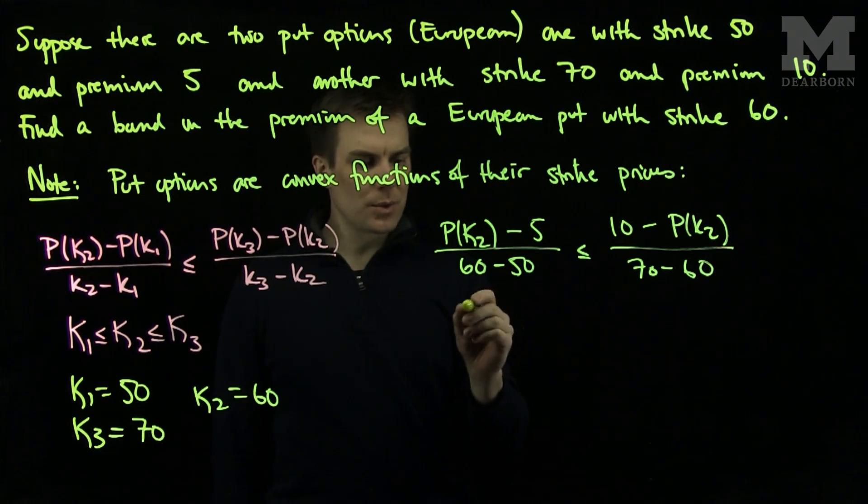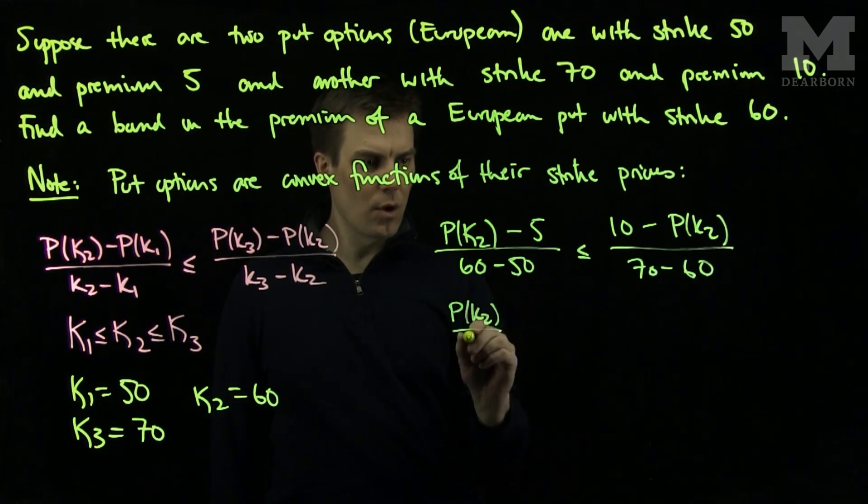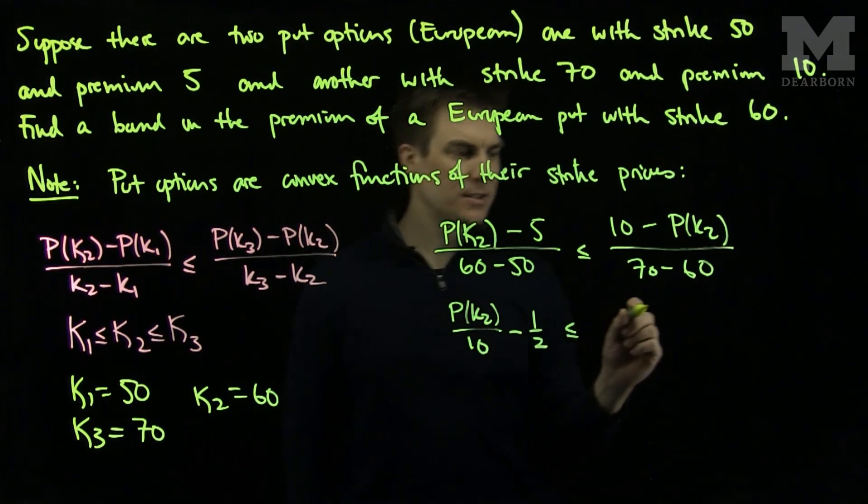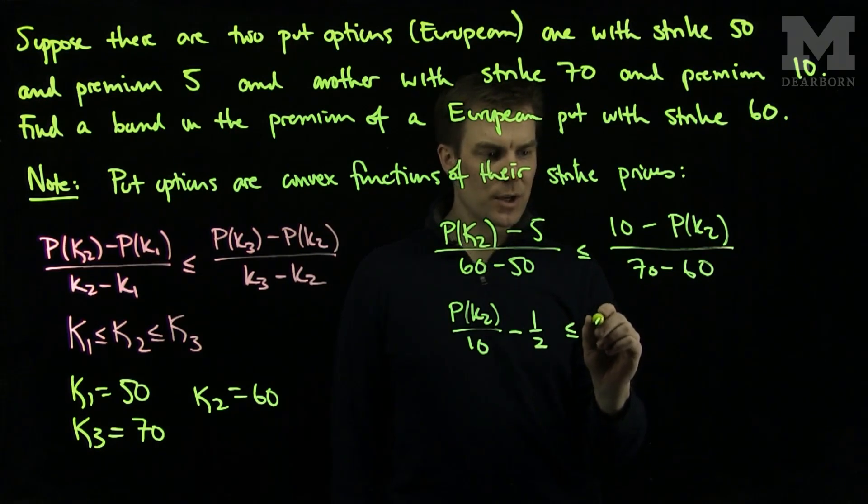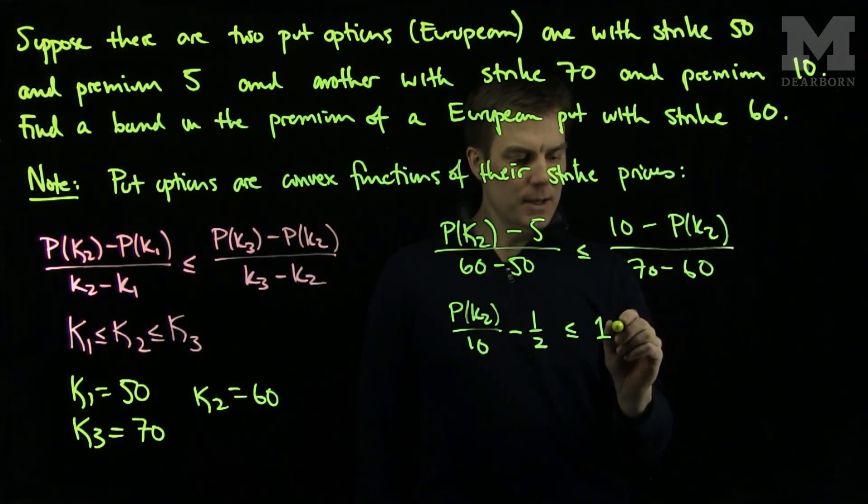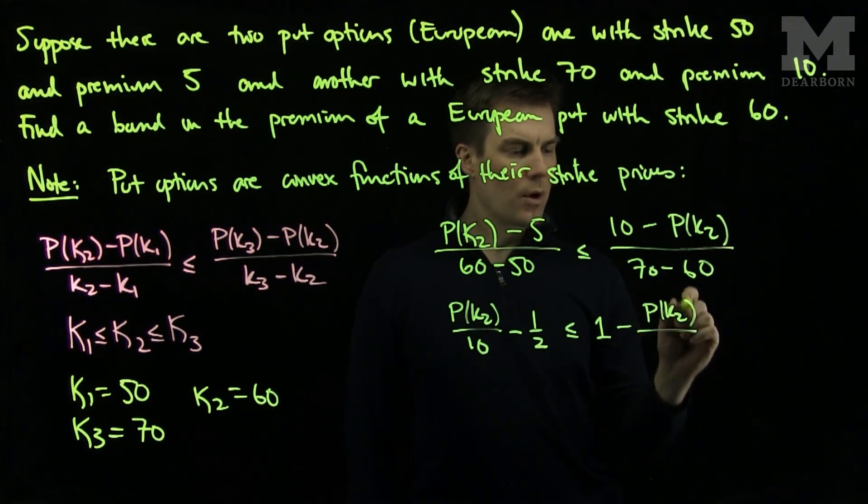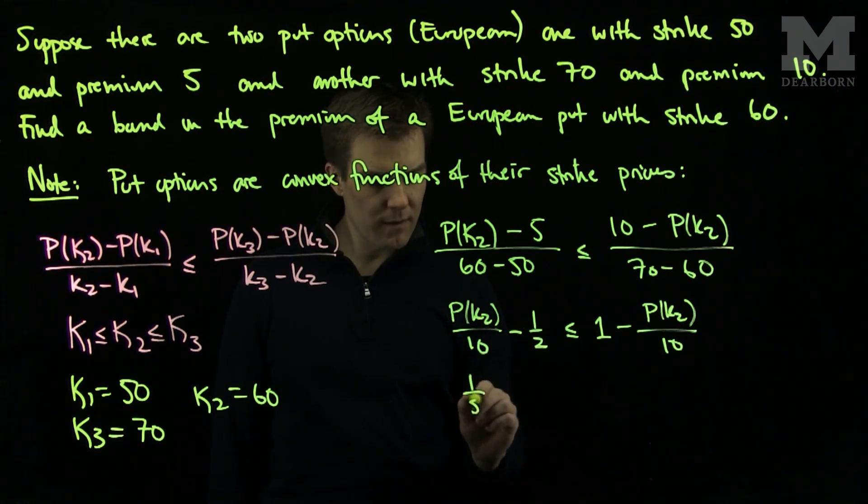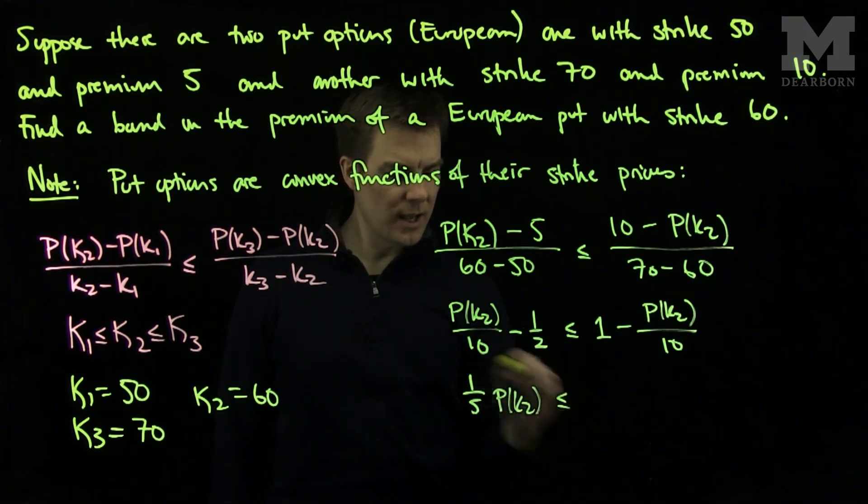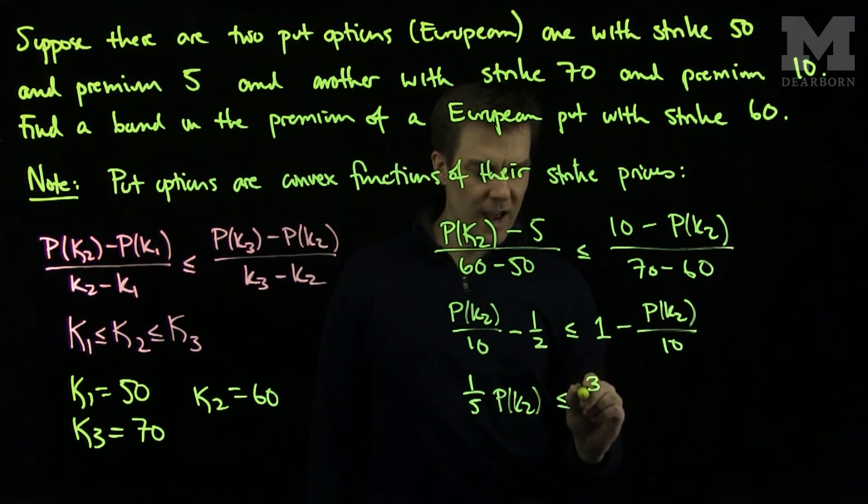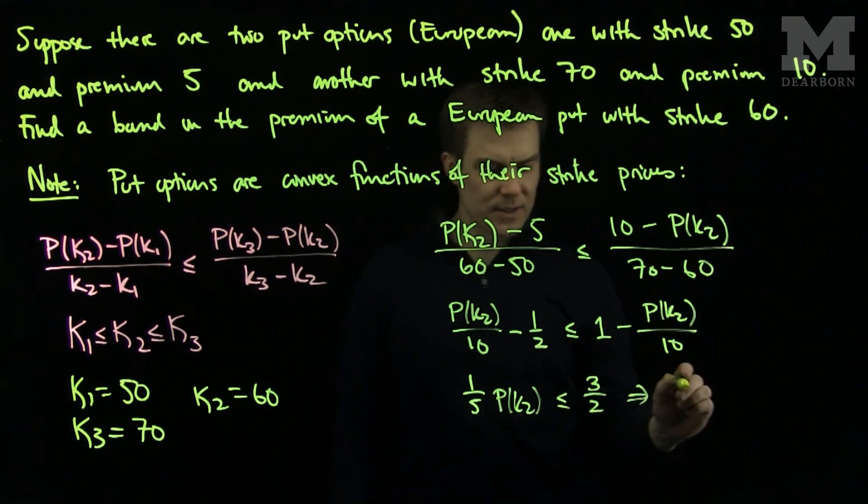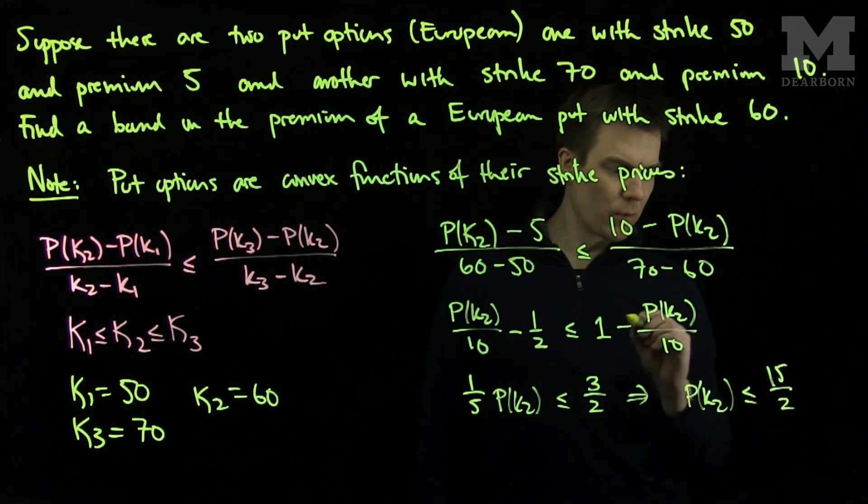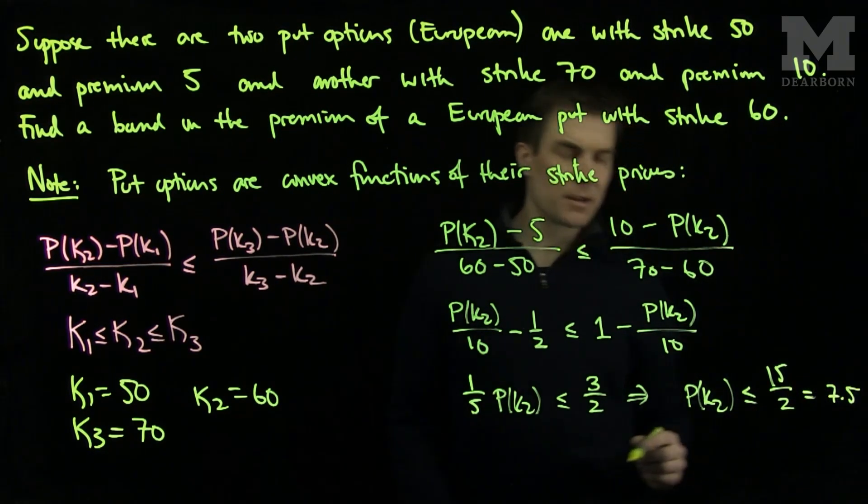And so now what we see is we see P(k2) over ten minus one-half is less than or equal to, this will be ten over ten, which is one, minus P(k2) over ten. So if I rearrange this, I will have one-fifth P(k2) is less than or equal to one-half plus one, which is three-halves. And this implies that P(k2) is less than or equal to fifteen over two, or seven point five.